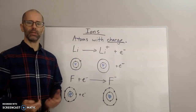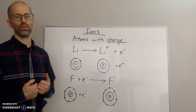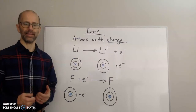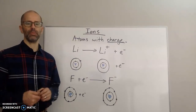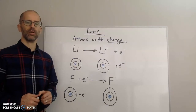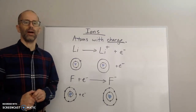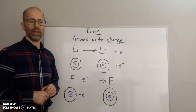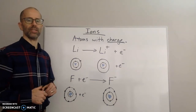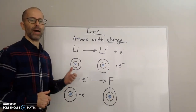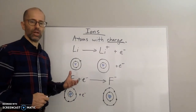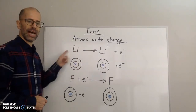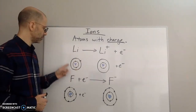Hello everyone and welcome back. My name is Mr. Cobalt and in this video we are going to go over ions. We talked about before how atoms tend to be neutral, and that's because they have a balance of protons and electrons. Electrons are negatively charged, protons are positively charged. Protons are in the nucleus and the negative electrons are on the outside of the atom.